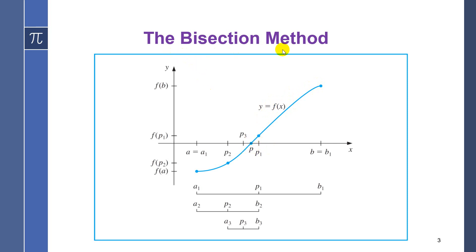So how does the bisection method work? First, it takes the interval [a, b], then it bisects this interval by 2, so (a + b)/2 gives us p1. Now, f(p1) is a positive value, so we eliminate b and take the new interval [a, p1]. Why? Because f(a) is negative and f(p1) is positive, so our new interval is [a, p1]. Then we bisect the interval [a, p1] by 2 and get p2.